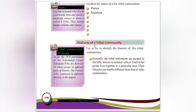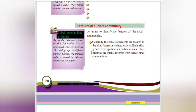Let us try to identify the features of a tribal community. As per the 1976 amendment of the Scheduled Castes and Scheduled Tribes Act, there are 35 tribal groups in different parts of Kerala. The Paniyar tribe, scattered in different districts, is the largest tribal group in Kerala.